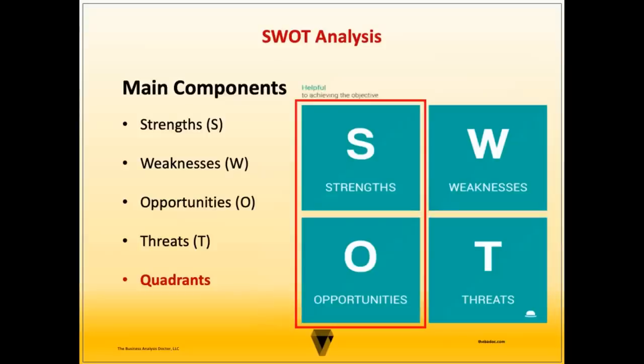Helpful quadrants are those in the SWOT analysis that represent factors which increase the organization's ability to achieve its goals and objectives, or may be favorable in terms of competitive advantage. Strengths and opportunities are considered helpful quadrants and should be maximized.